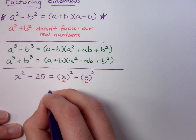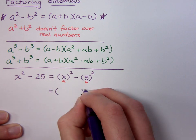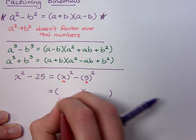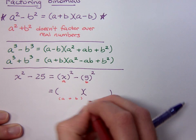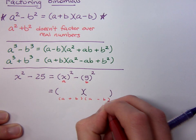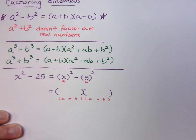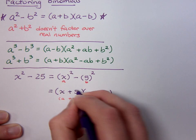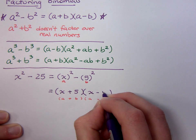So when I factor this, I know what form that's going to take. This is going to take the form of a plus b times a minus b. And if we know that, that just means going x + 5 times x - 5.